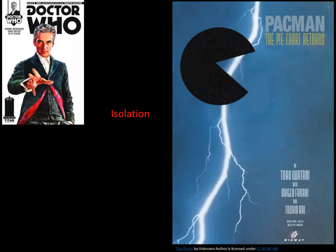A common way to emphasize a character or text is to isolate the focal point against a less attention-getting background. Isolation can be in the center, such as Doctor Who, or it can be in a quadrant surrounded by negative space, such as Pac-Man. Both are examples of isolation.